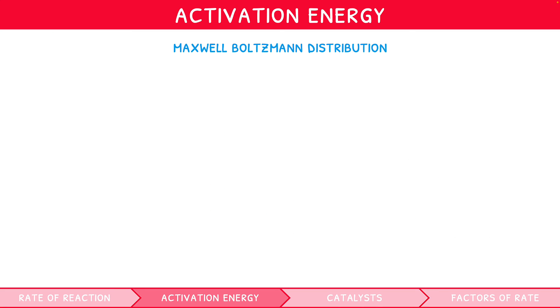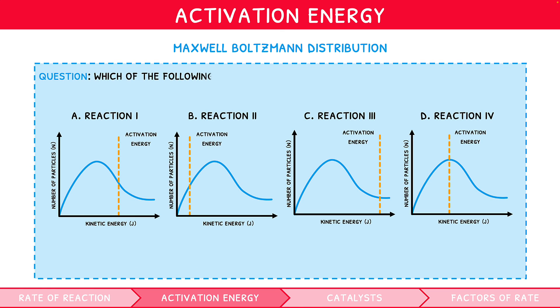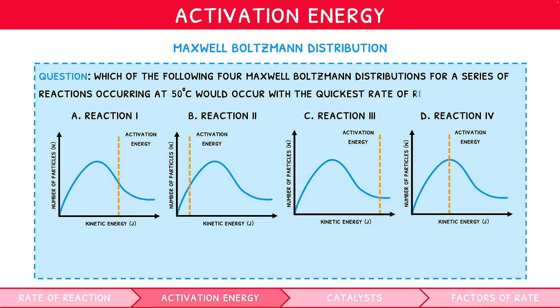To reinforce this, let's look at an example question. Which of the following four Maxwell-Boltzmann distributions for a series of reactions occurring at 50 degrees Celsius would occur with the quickest rate of reaction? As we know, the more particles have a kinetic energy greater than the activation energy, the faster a reaction will occur. So, we are looking for the diagram with the largest number of particles above the activation energy line, i.e. the largest area under the curve beyond this line. The answer is therefore B.